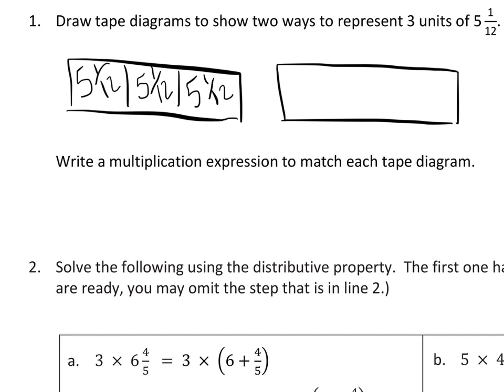But you could also distribute this work and break it apart. I could think of three fives. Five, five and five. Three sets of fives. And also three sets of twelfths, right? So, a twelfth, a twelfth, and a twelfth.